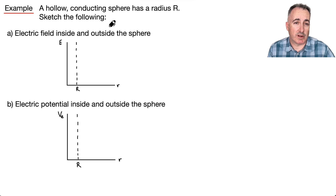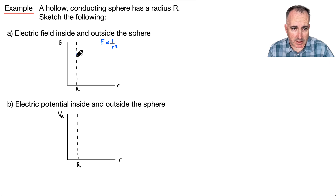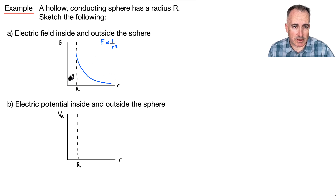Now we have an example with a hollow conducting sphere of radius R, and we're supposed to sketch the electric field inside and outside. Outside the sphere, the electric field strength is proportional to 1 over R squared, so it goes something like this. Inside — in the center — it was actually zero. So inside the radius it's going to be zero, and at the radius and outwards it goes like this.